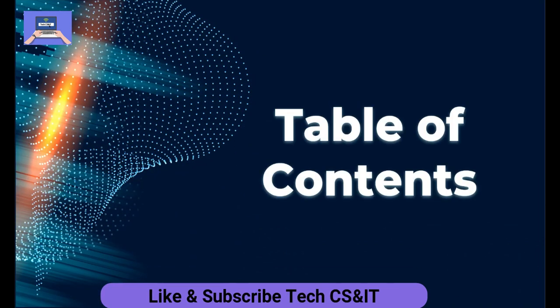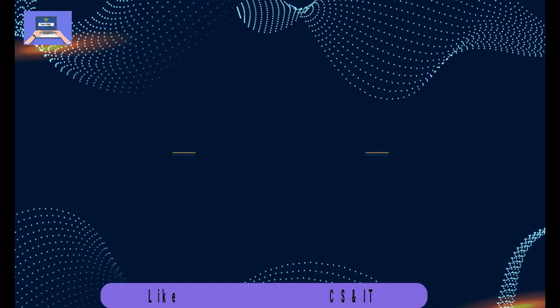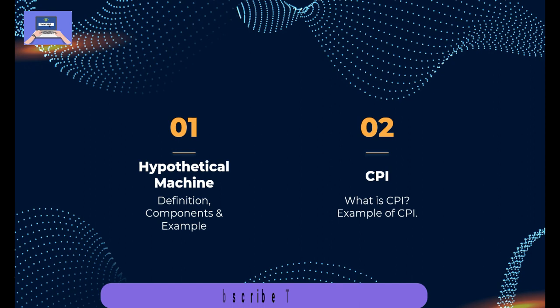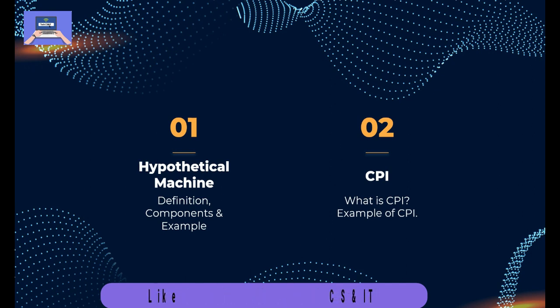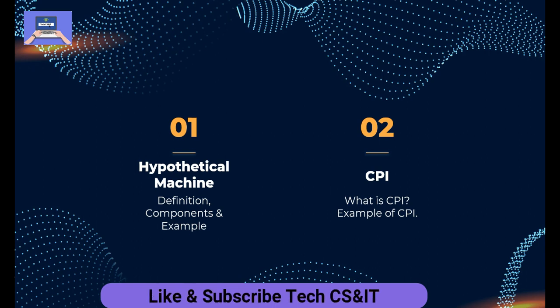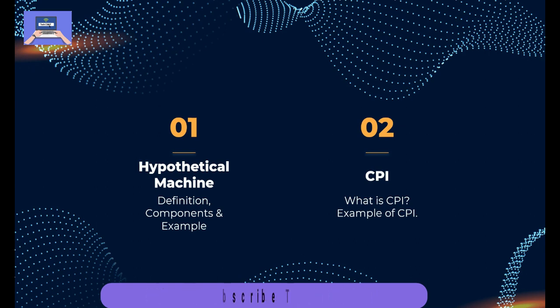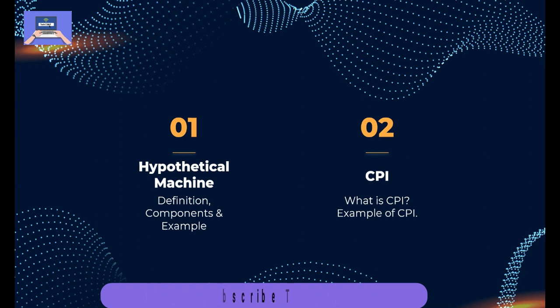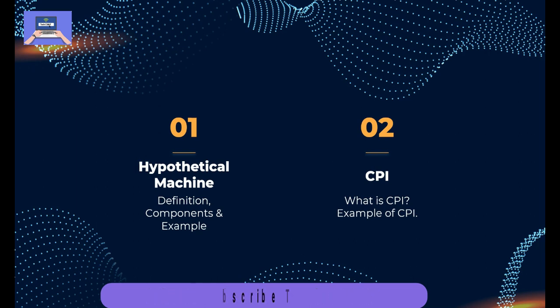Let's look at the table of contents. First, we will talk about the hypothetical machine — its definition, components, and an example. The second topic is CPI, where we will discuss CPI and some examples.